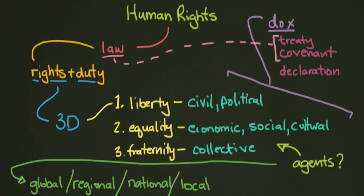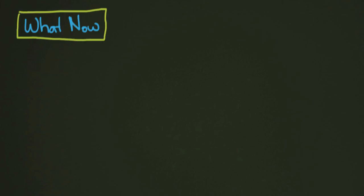And then I think the most important level in this whole thing is you — the individual level. You as an individual play an important role in the future of human rights and how human rights are enacted in your community. Because we've thought about human rights for quite a while now, the question is: what are we doing now? What are we going to do with all this information and understanding that we've developed?